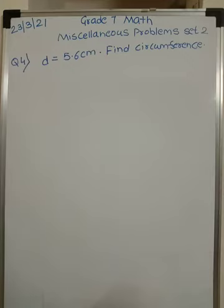Good morning grade 7. We are doing miscellaneous problems set 2, question number 4. I will just read it for you. Diameter of a circle is 5.6 cm. Find its circumference.